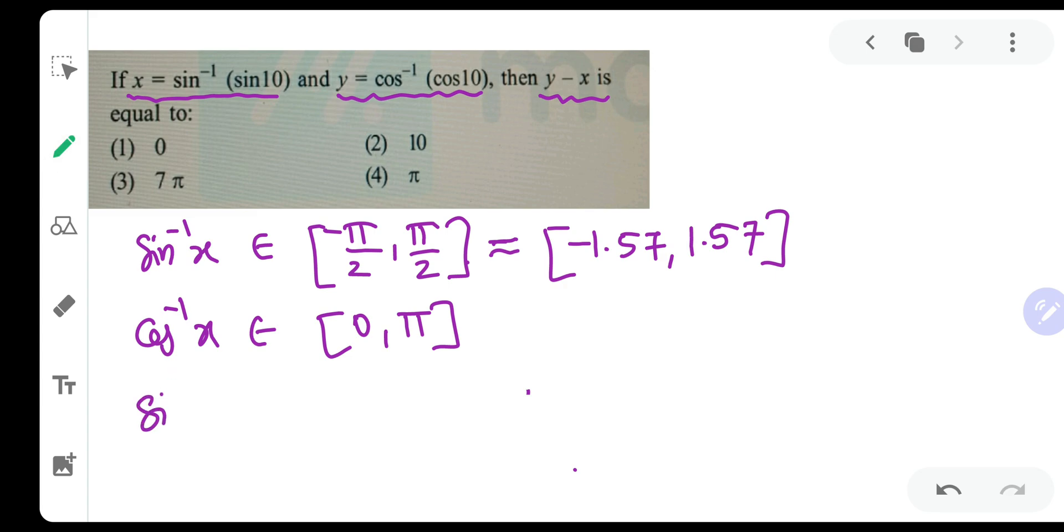Suppose sin inverse of sin 10 is there. Just try to make some changes in this 10. And while making those changes, remember that sin is positive in first and second quadrant. So you try pi plus 10, pi minus 10, 2 pi plus 10, 3 pi minus 10 and so on. Such 3, 4 combinations you should try. You will get sin inverse of sin of 3 pi minus 10.